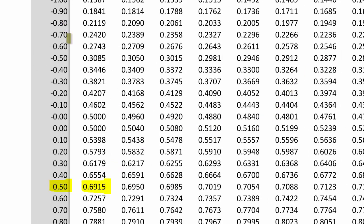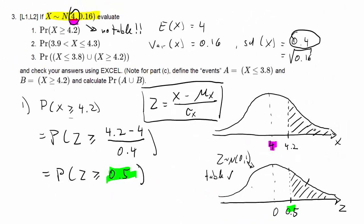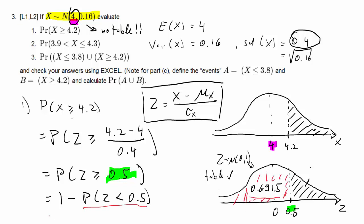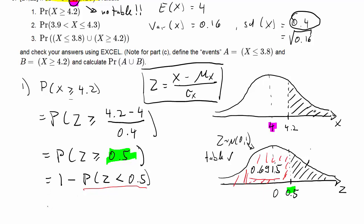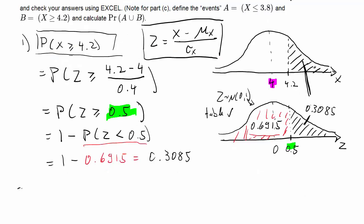The probability that z is smaller than 0.5 is 0.6915, which we look up from the standard normal table. Therefore the tail probability is 1 minus 0.6915, which equals 0.3085, because the probability we read off is of the smaller-than type. The tail probability in the x world — the probability that x is larger than 4.2 — is exactly the same, so it equals 30.85%.